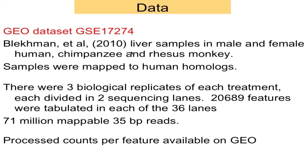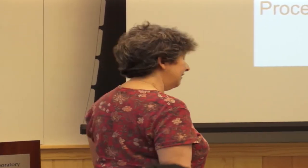This is kind of an old dataset from 2010, but it has some unique features that make me want to keep it. One feature is that each sample was split across two lanes to get enough reads. There are three biological replicates of everything. The main reason I used this in the first place is that there's a table of counts available on GEO — not just the raw data — so I didn't have to go back and do all the mapping and summaries myself.